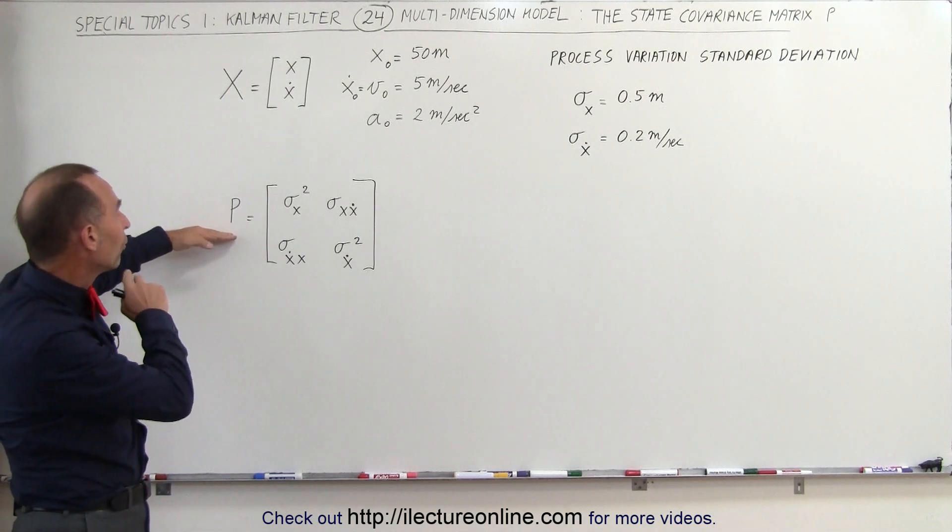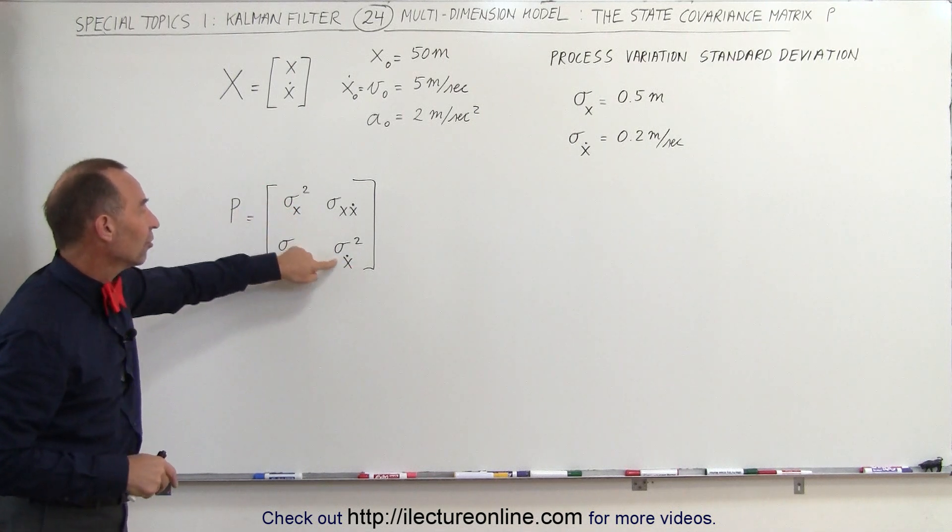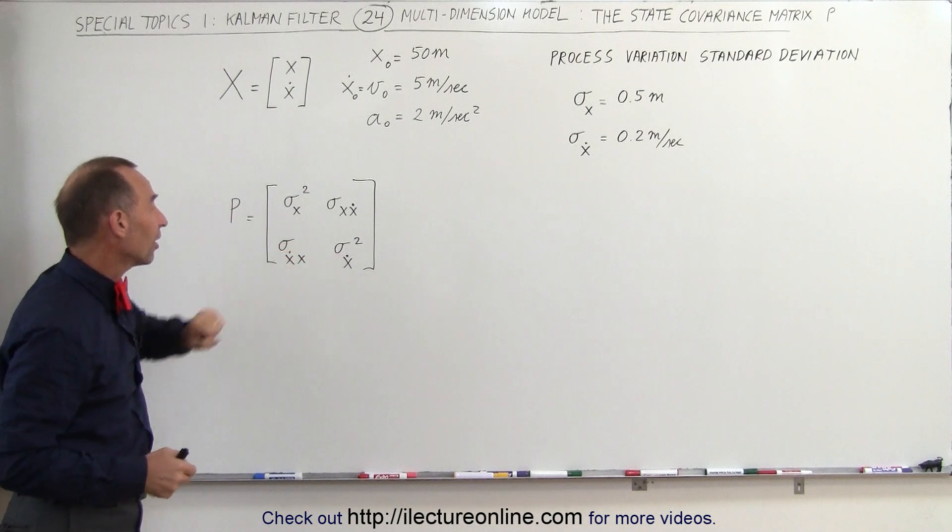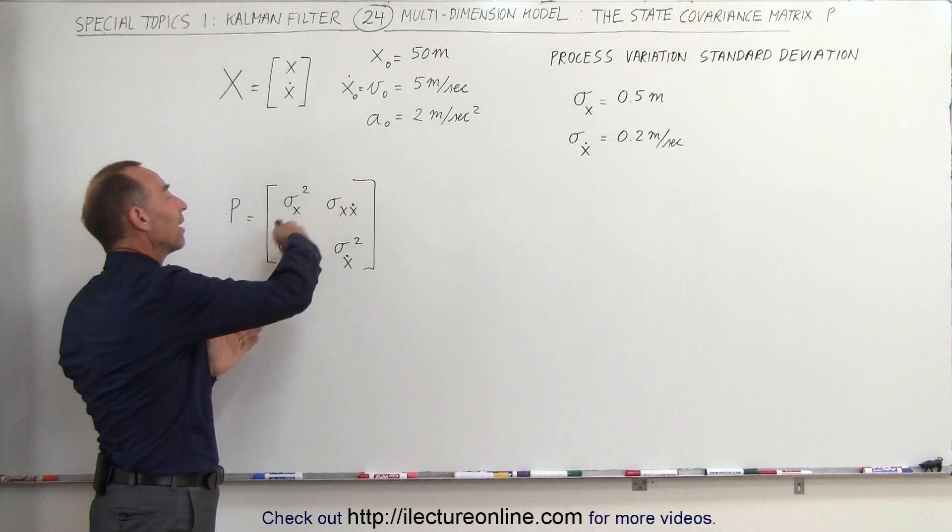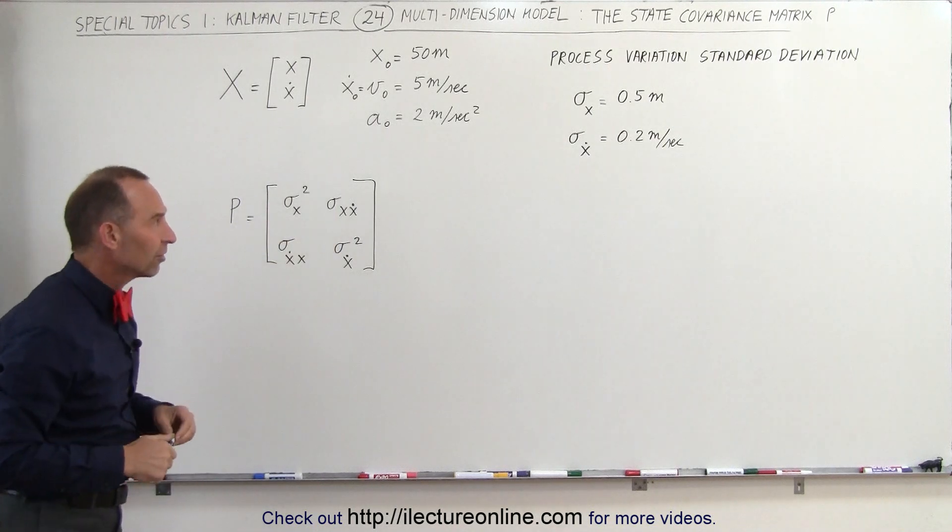The state covariance matrix looks like this. On the diagonal we have the variances of the two variables that we are trying to track, position and velocity, and on the off diagonal we have the elements that show the covariance, the relationship between position and velocity.